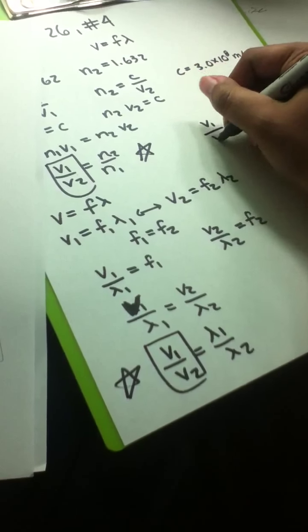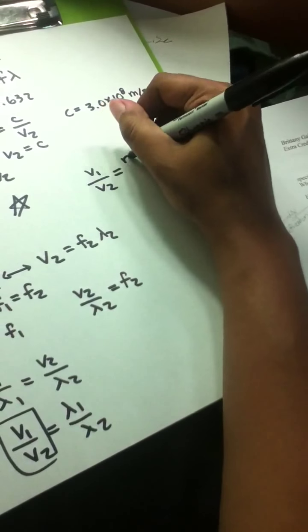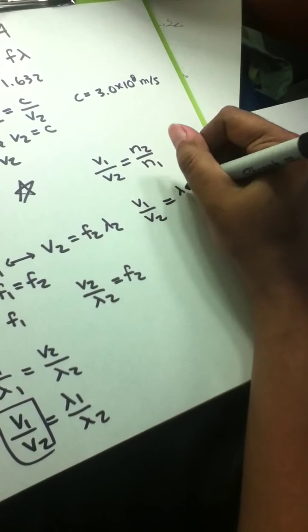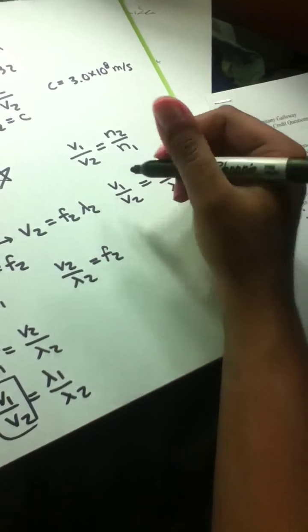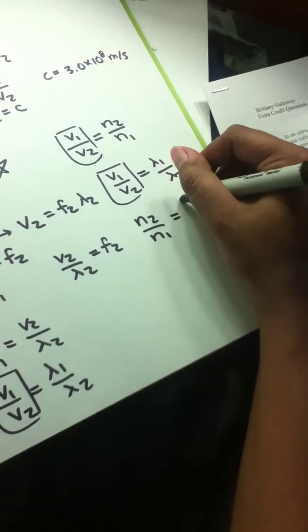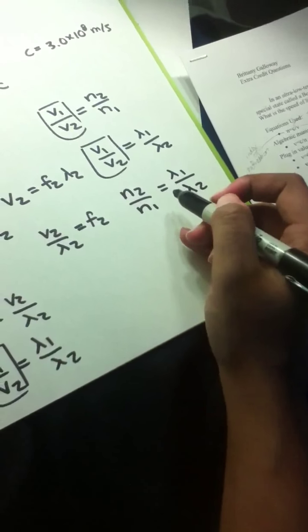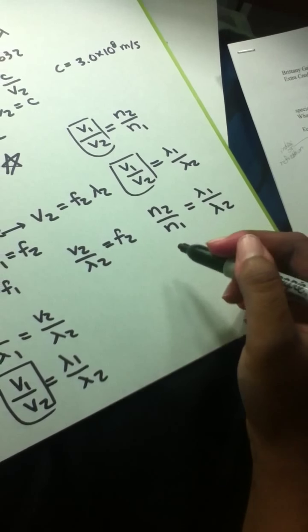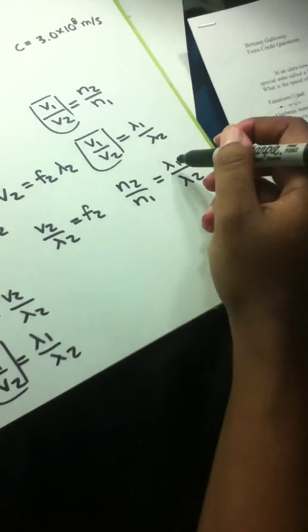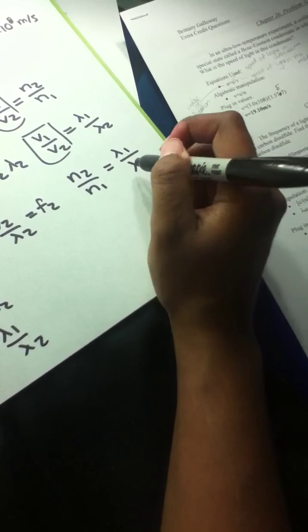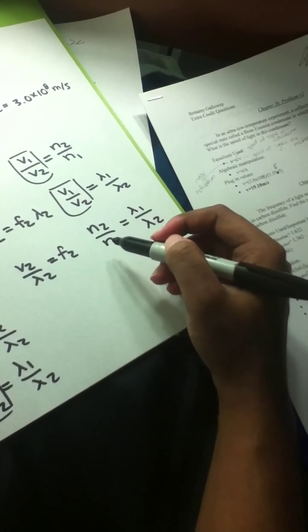Rewriting both equations side by side, we can now set them equal to one another. What we have is exactly what the problem is asking for: the ratio lambda 1 over lambda 2, which is the wavelength in ethyl alcohol over the wavelength in carbon disulfide. This ratio equals N2 over N1, and we already have those values.